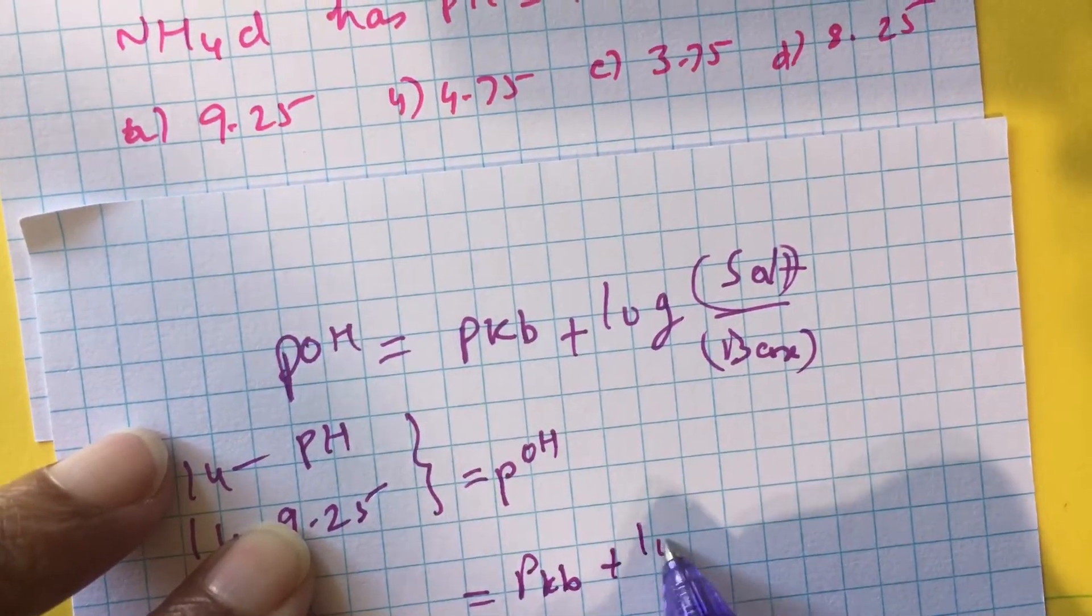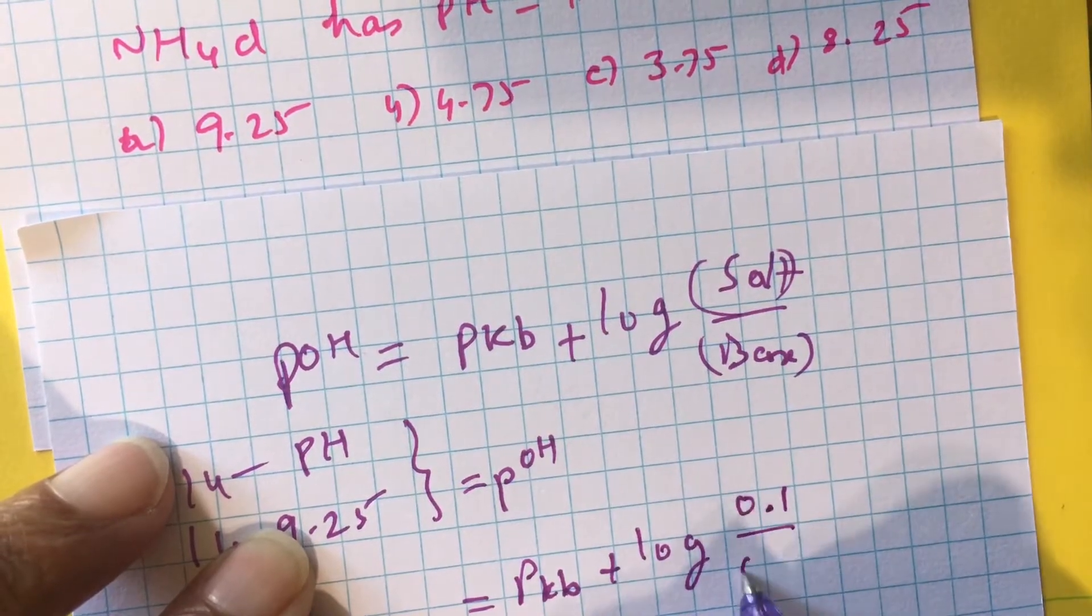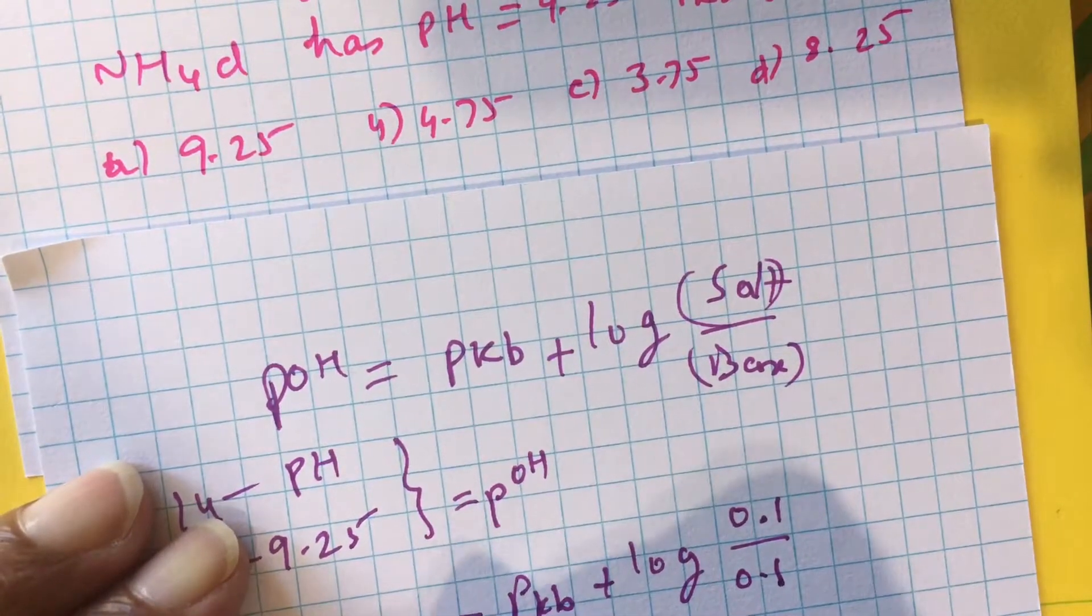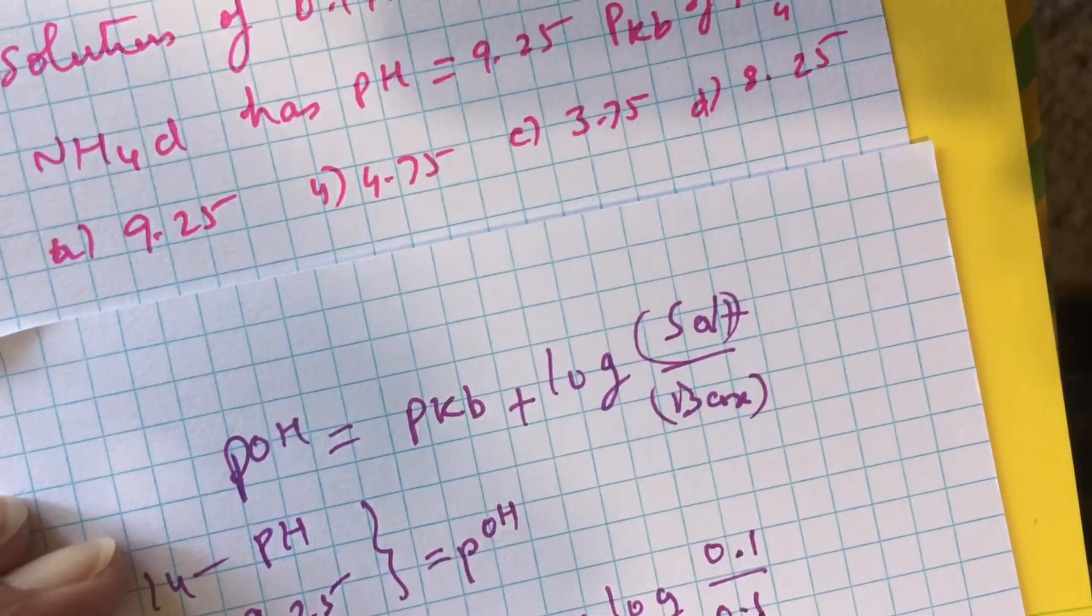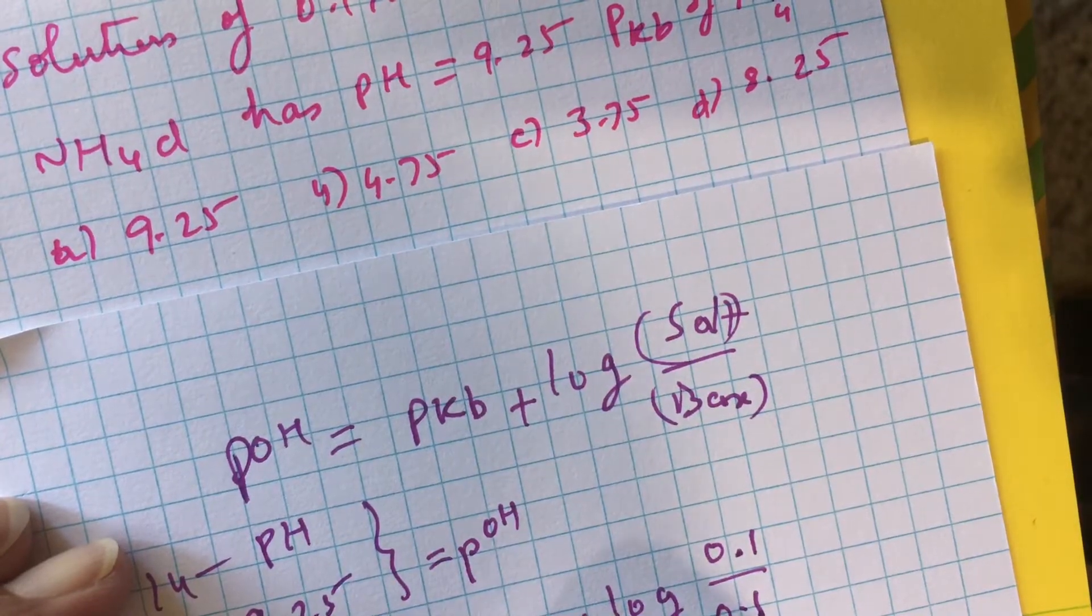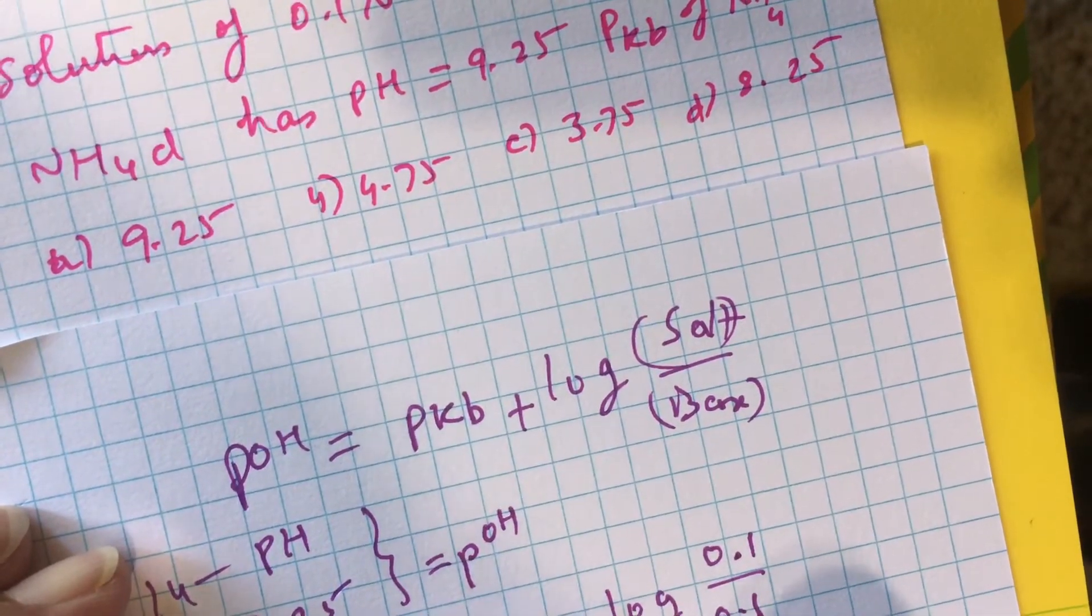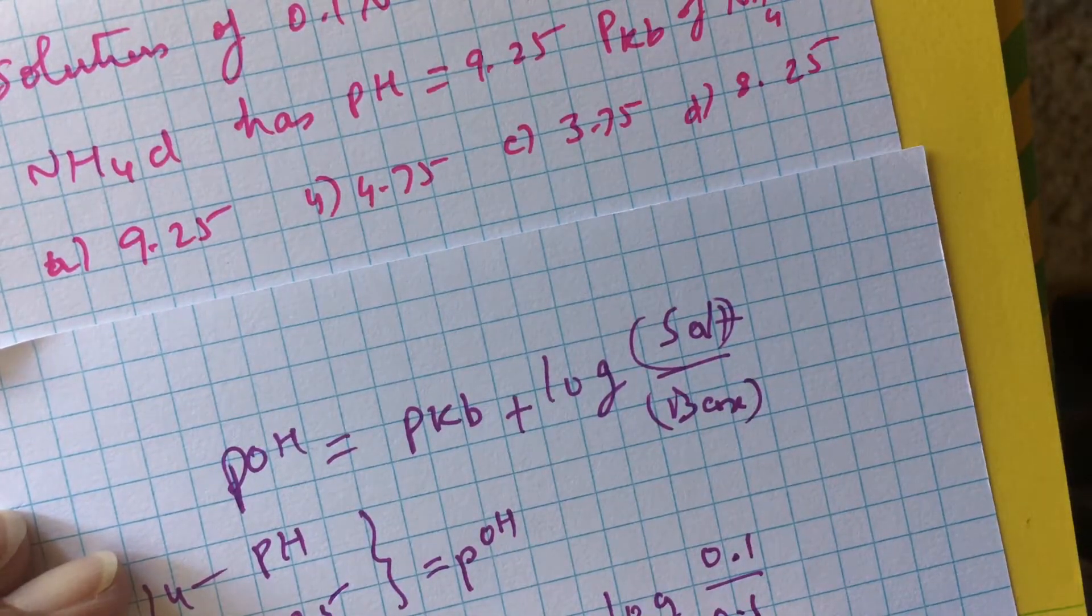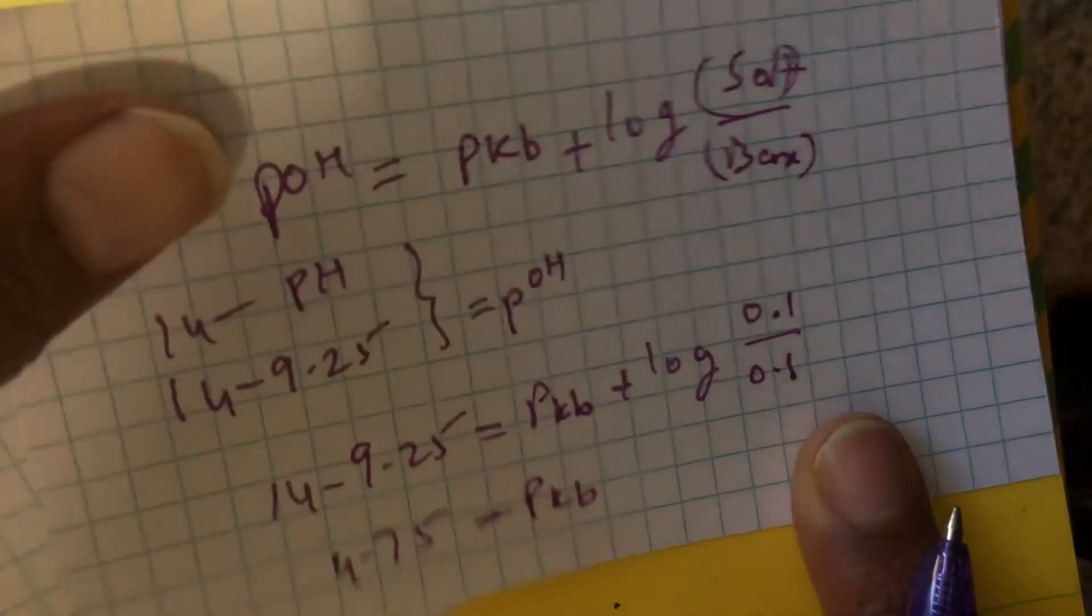pOH is equal to pKb plus log of concentration of salt by concentration of base. 14 minus 9.25, which is 4.75, is equal to pKb, because log of 0.1 by 0.1 is log 1, and log 1 is 0. Therefore, the pKb of the given solution is 4.75.